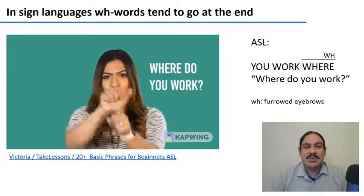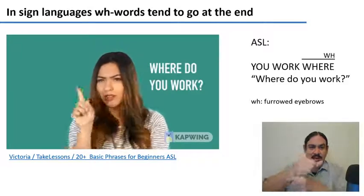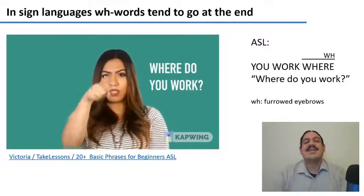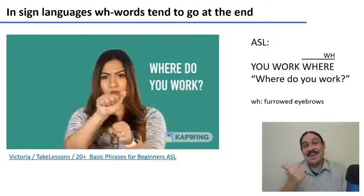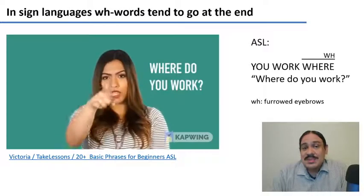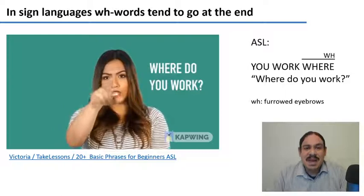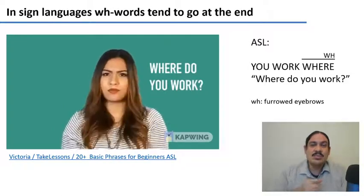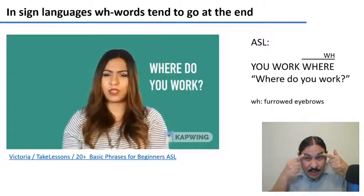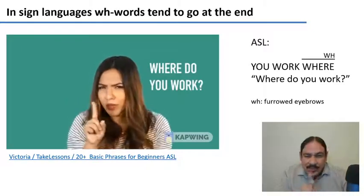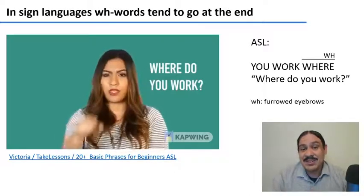You can see an example here from ASL. This one means 'your work where.' The wh-word is at the very end of the whole sentence, which is not where you would see it in most spoken languages. There's also a non-manual sign going on — 'where' is composed of this motion, but also furrowed eyebrows. You have to move your eyebrows like this for the word 'where' to be articulated.